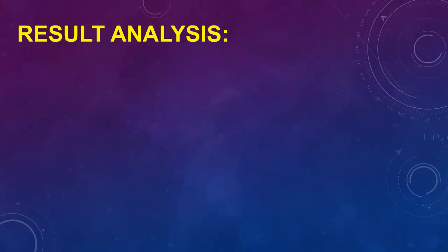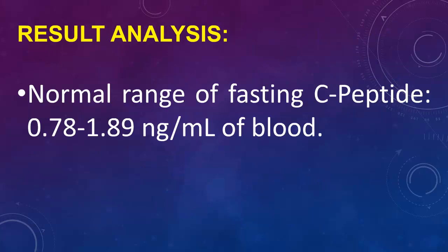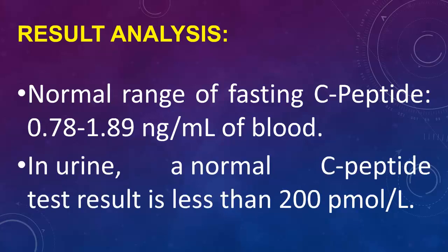Result analysis: The normal range of fasting C-peptide is 0.78 to 1.89 nanograms per milliliter of blood. In urine, a normal C-peptide test result is less than 200 picomoles per liter.